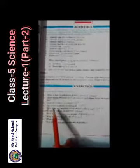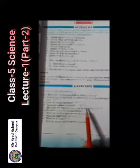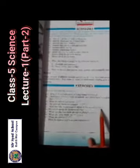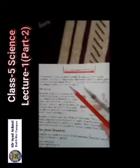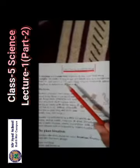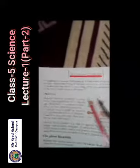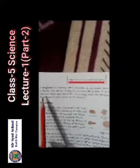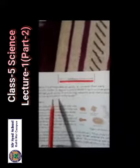Now Part E: How does the euglena move about in the water? Its answer is on page number 4. The euglena, third line: uses a long whip-like projection called a flagellum to move about in water.